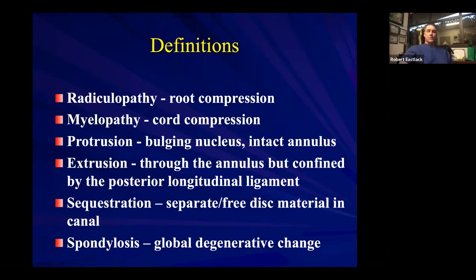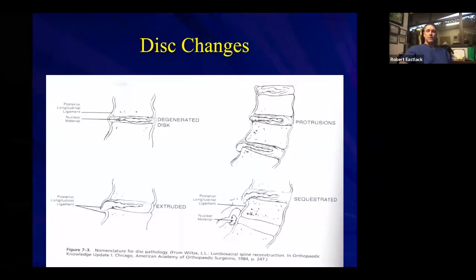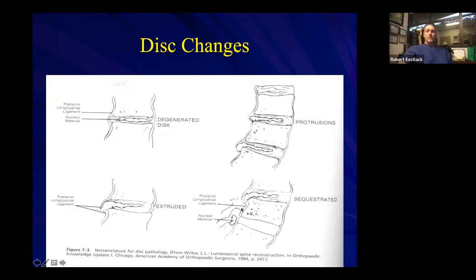Spondylosis is just global degenerative change. These are examples of those different entities. You can see on the bottom right here a variant of a sequestration where you have material all the way down here, distant from and separated from the extrusion event above.